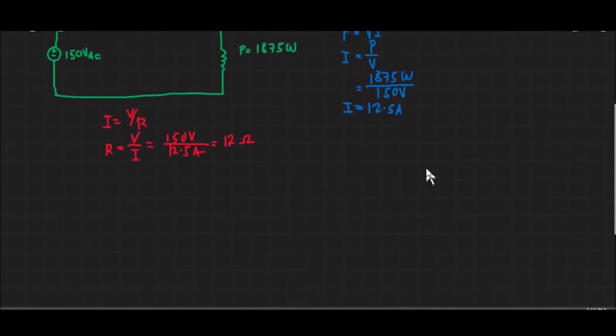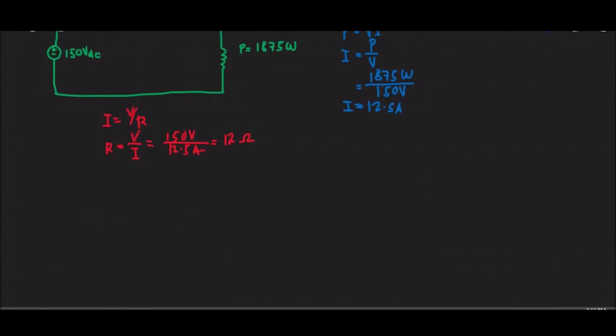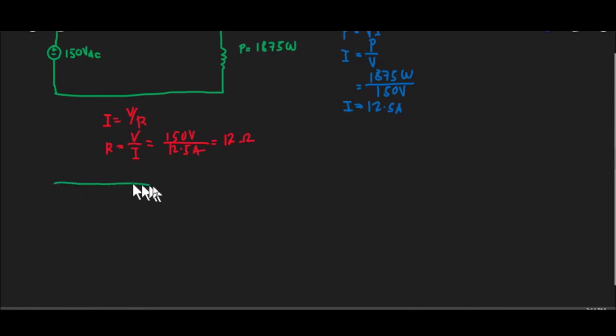Now that we have that information, we can solve for the inductance of the coil. We can only solve for the inductance if we subject it to an AC source, because the effect of inductance is much more observed when the supply is AC. The reason is that reactance is only present when your supply is an AC source.